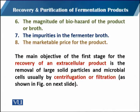The sixth criterion is the magnitude of the bio hazards of the product, which is directly linked with the containment level of the fermentation process. Once we have checked the risk associated with the process organism, and if the product also has bio hazards, we should continue our recovery process accordingly. The seventh criterion is the impurities in the fermented broth — how many possible impurities there can be.